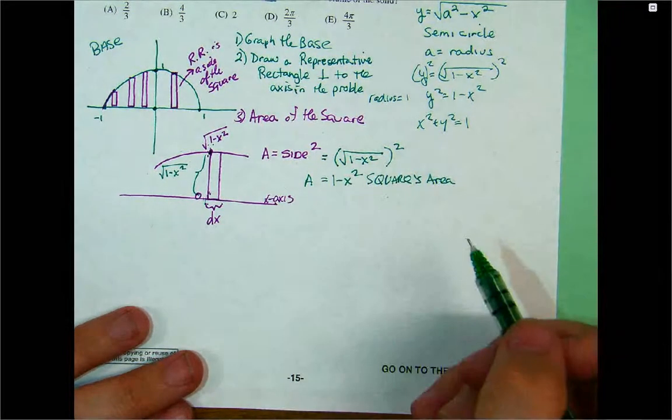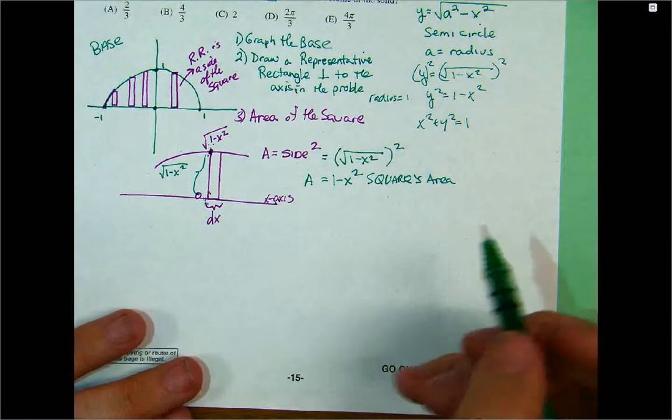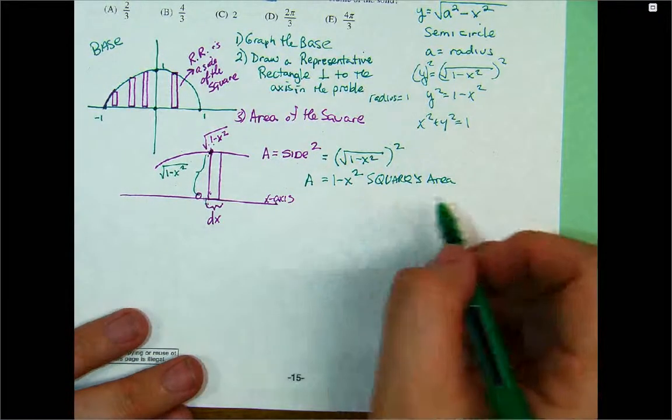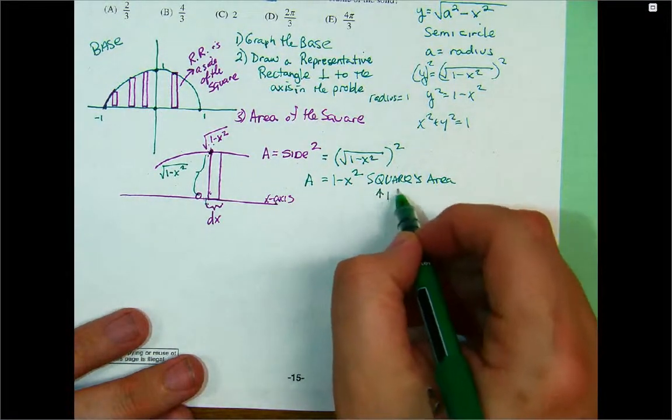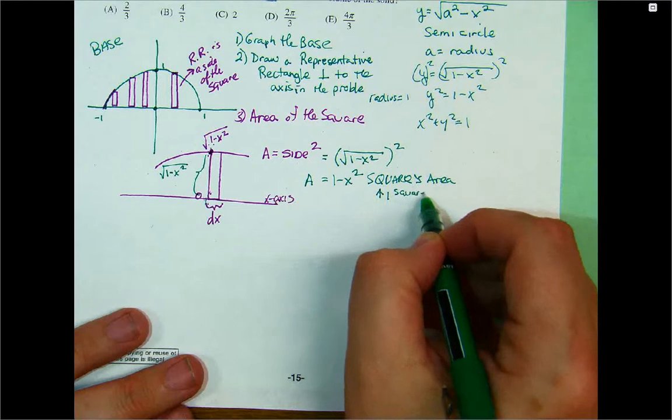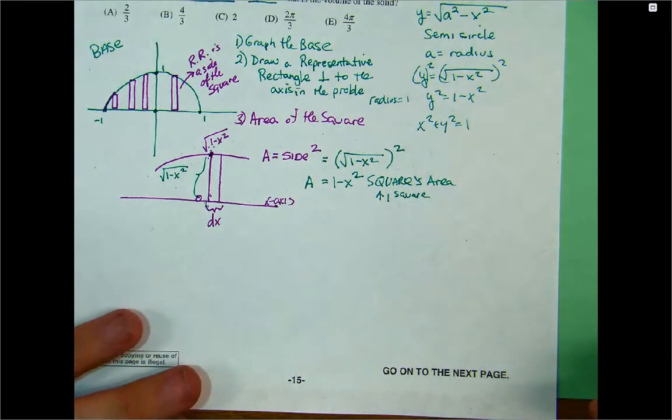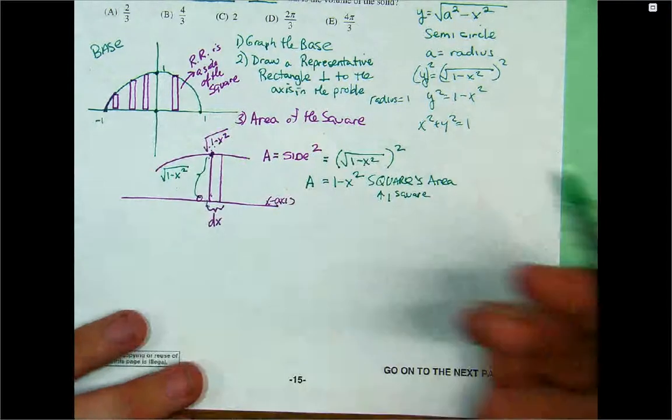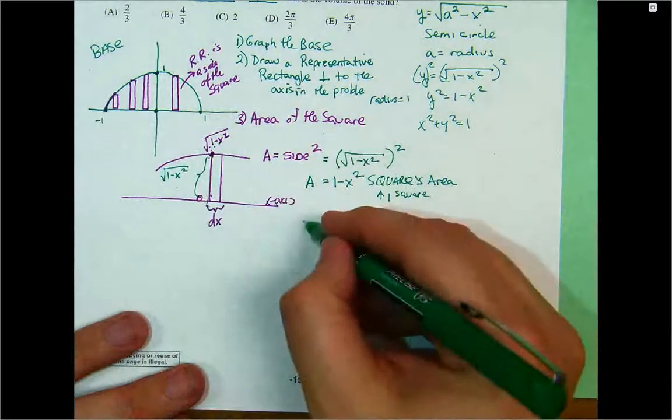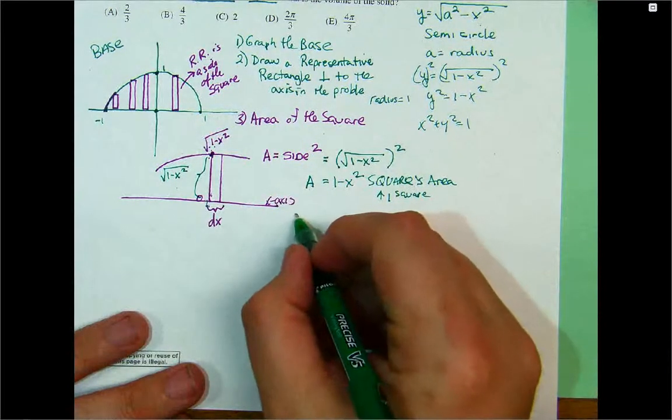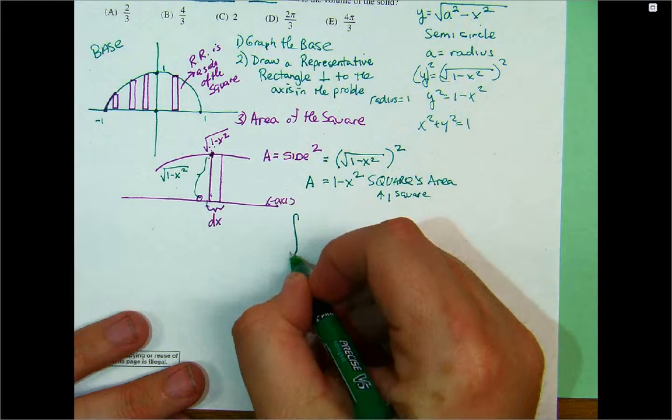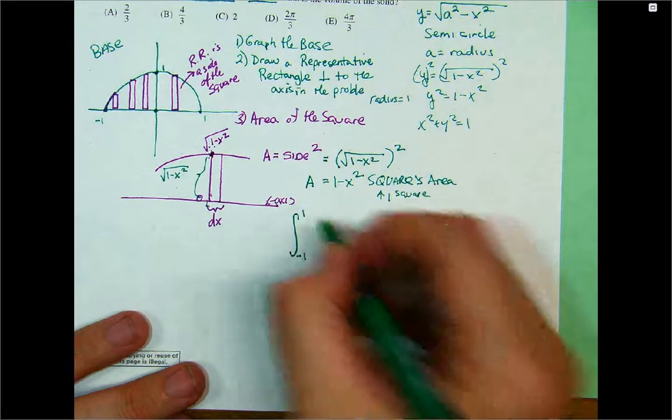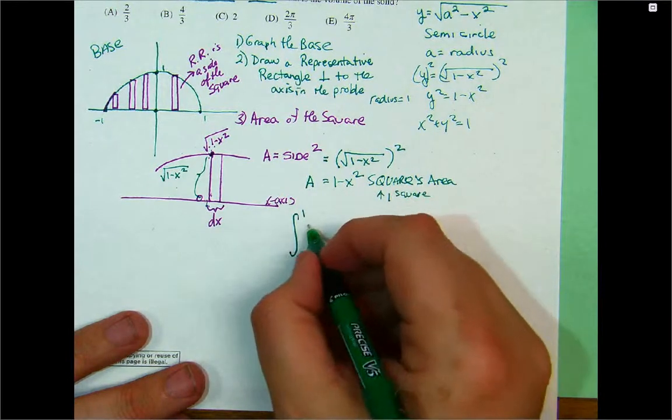Now, so I figured out the area of 1 square. And this is just for 1 square. How am I going to figure out all of them? How do I add up all the squares between negative 1 and 1? Yep, the integral from negative 1 to 1 of 1 minus x squared dx.